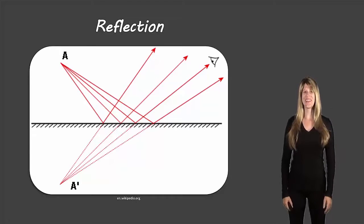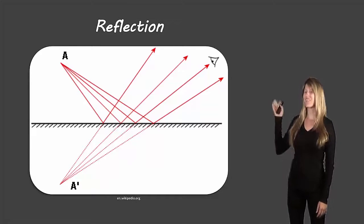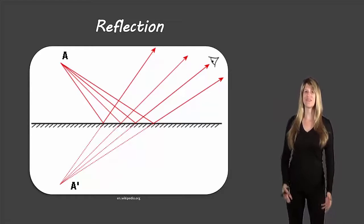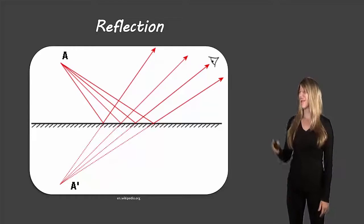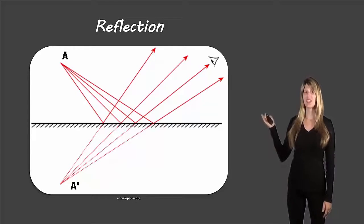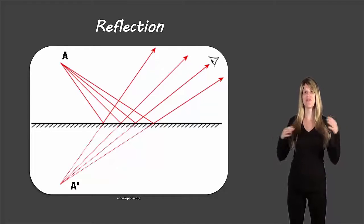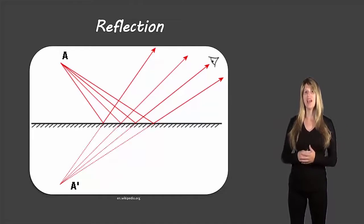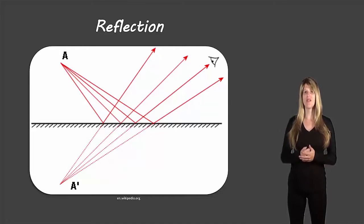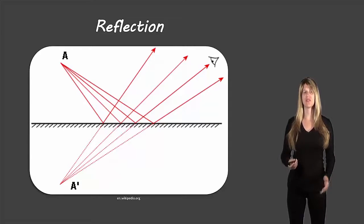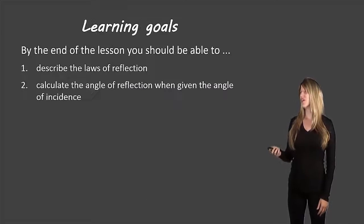Hello students, Ms. Swanson here. Today we're taking a look at reflection off of mirrors. This picture here shows a plain mirror, which means a flat mirror, and it shows light rays bouncing off of that mirror following the rules of reflection.